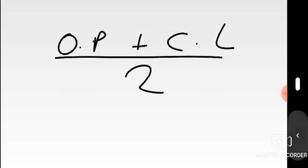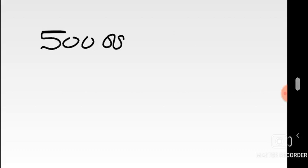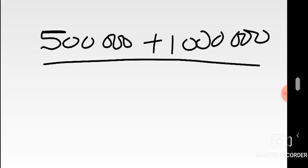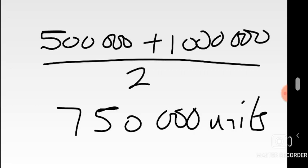August closed with 500,000, which becomes September's opening. What closes in a previous month becomes the opening in the next month. So September's opening is 500,000 and its closing was one million. Average inventory equals opening plus closing divided by two: (500,000 plus 1,000,000) divided by two equals 750,000 units. Remember — this is inventory, so the answer should be expressed in units. That's Part C.